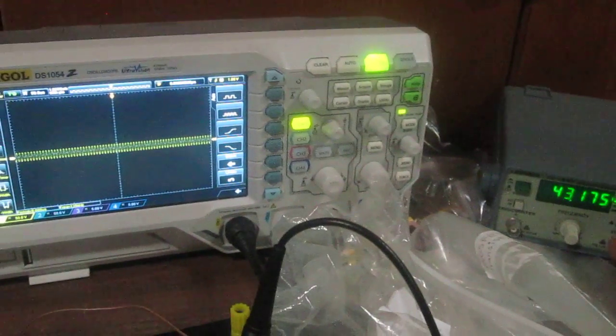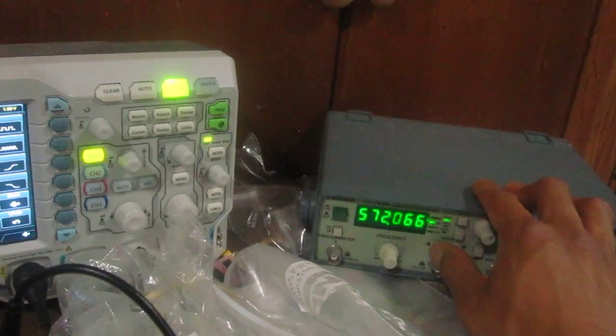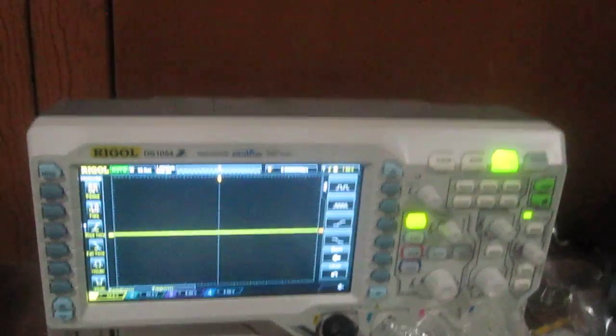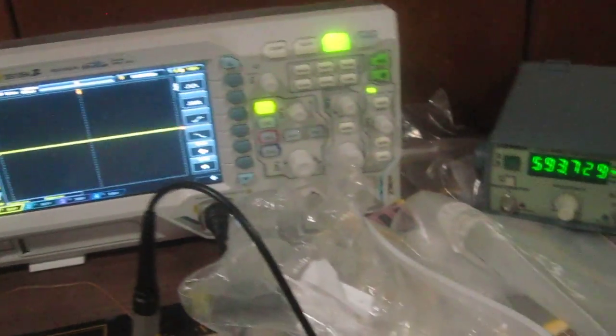If I increase it even more, you can - now it's at approximately 600 kHz and you can see it's practically nothing. So this is how a low-pass filter works.